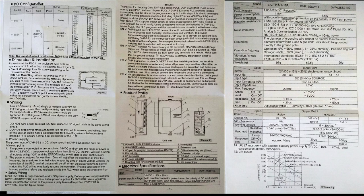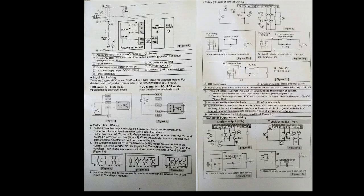Now you can see the DVP-SS2 instruction sheet. You can look at the difference between transistor type and relay type, and the input/output configuration. For relay type output, C0, Y0, Y1, and Y2 are connected to C0. You can see the output point wiring circuit.